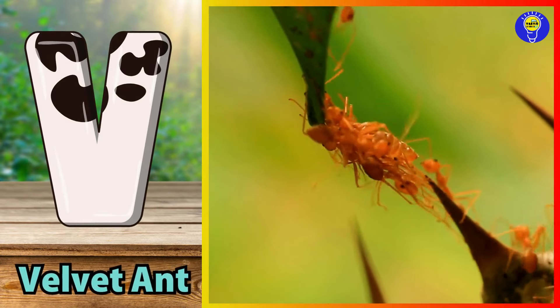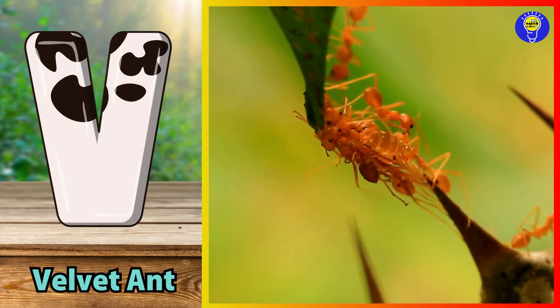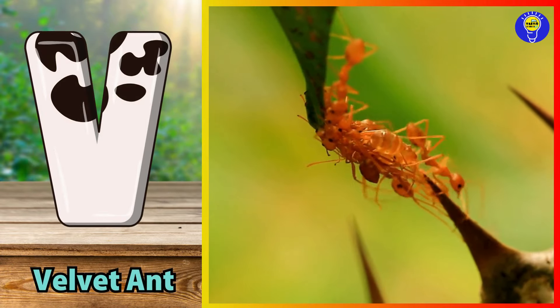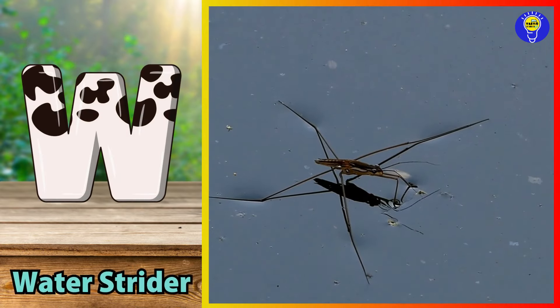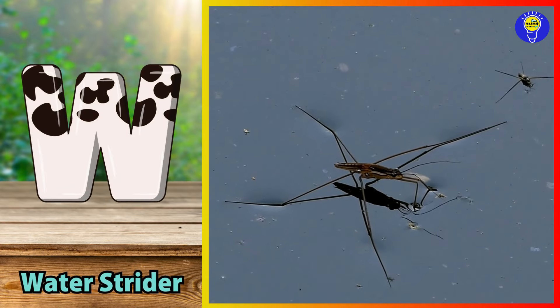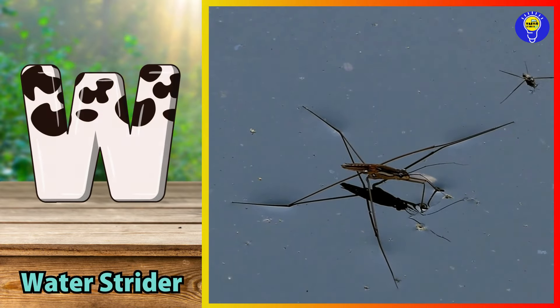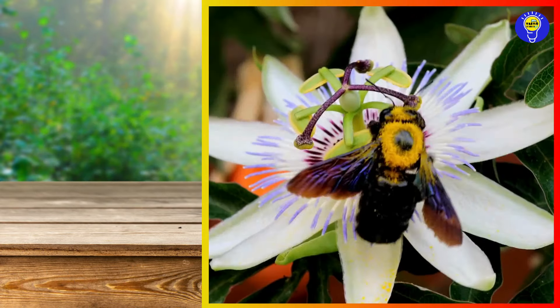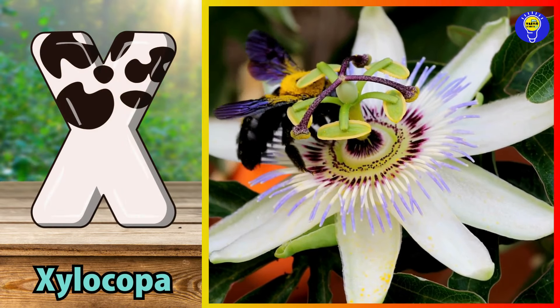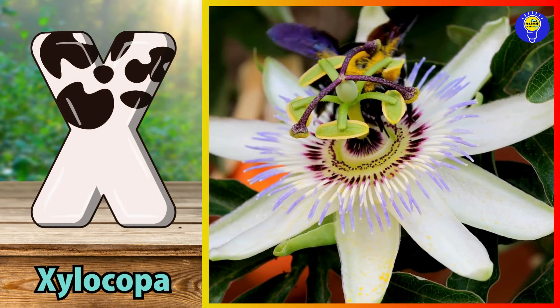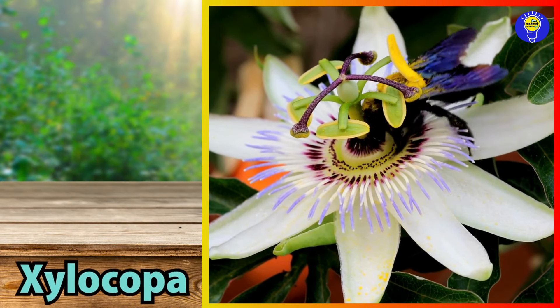V is for velvet ant. V, v, velvet ant. W is for water strider. W, w, water strider. X is for xylocopa. X, x, xylocopa.